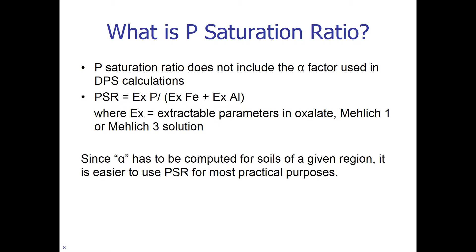What is the P saturation ratio? The P saturation ratio is simply a ratio and does not include an alpha factor as used in the DPS calculations. PSR is simply a ratio of extractable P divided by extractable iron and aluminum. These parameters can be determined in an oxalate, Mehlich-1, or Mehlich-3 solution. Since alpha has to be computed for soils of a given region, it is easier to use PSR for more practical purposes.